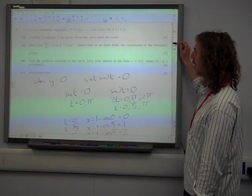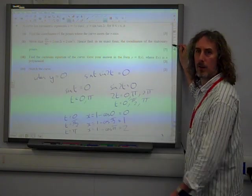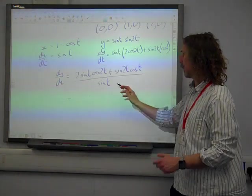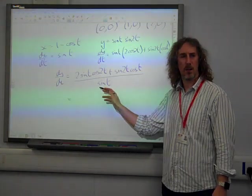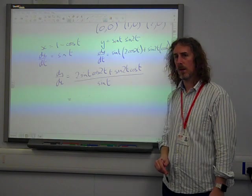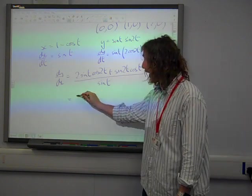Right. The cos 2t is all right, isn't it, actually? If you look at that, the first term is 2 cos 2t. And if we cancel the sin t there, we've got 2 cos 2t. So that first term is brilliant. That's exactly what we want.